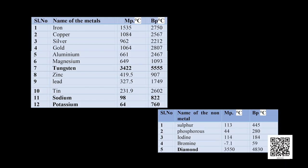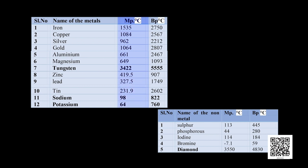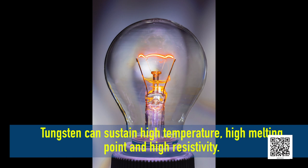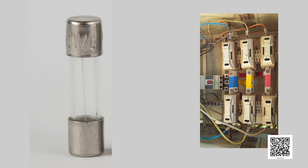Looking at the table showing melting points and boiling points of metals and non-metals — metals generally have a high melting point compared to non-metals. Exceptions include sodium and potassium, which are soft metals with low melting points. Diamond, being a non-metal allotrope of carbon, possesses the highest melting point. Tungsten is used as a filament in electric bulbs due to its high melting point, high temperature resistance and high resistivity. Fuse wires need a lower melting point, hence they are made of alloys of tin and lead.